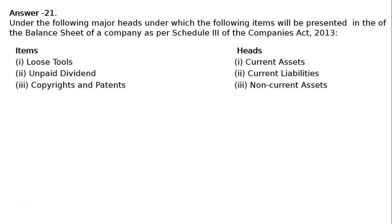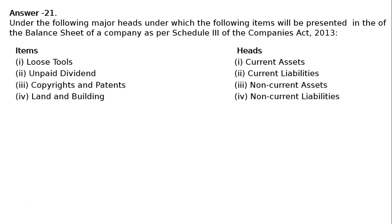Item 3: Copyrights and Patents — Head is Non-Current Assets. Item 4: Land and Building — Head is Non-Current Assets.